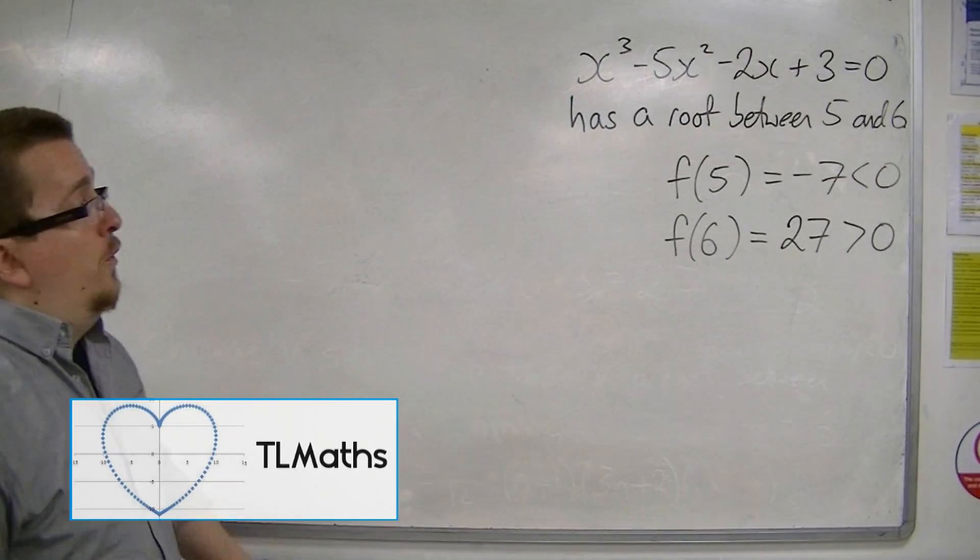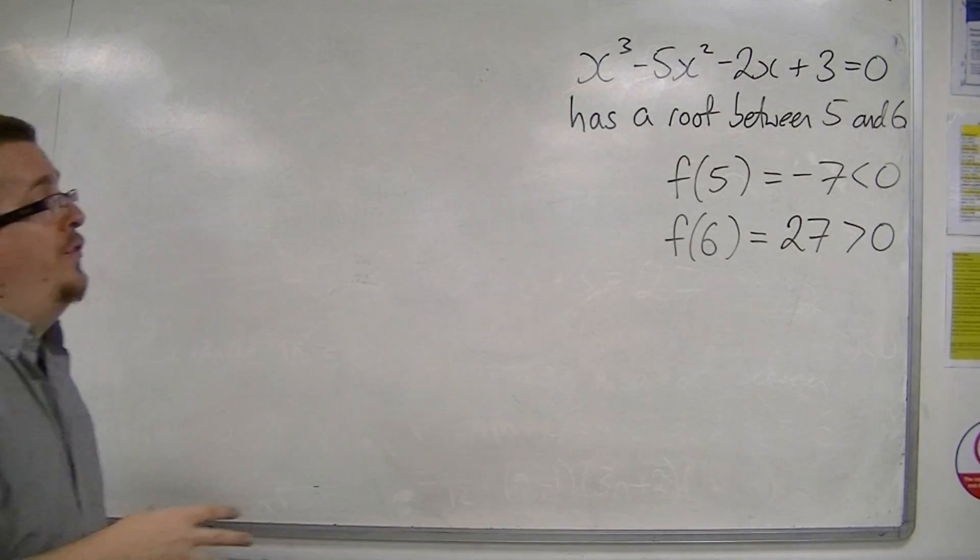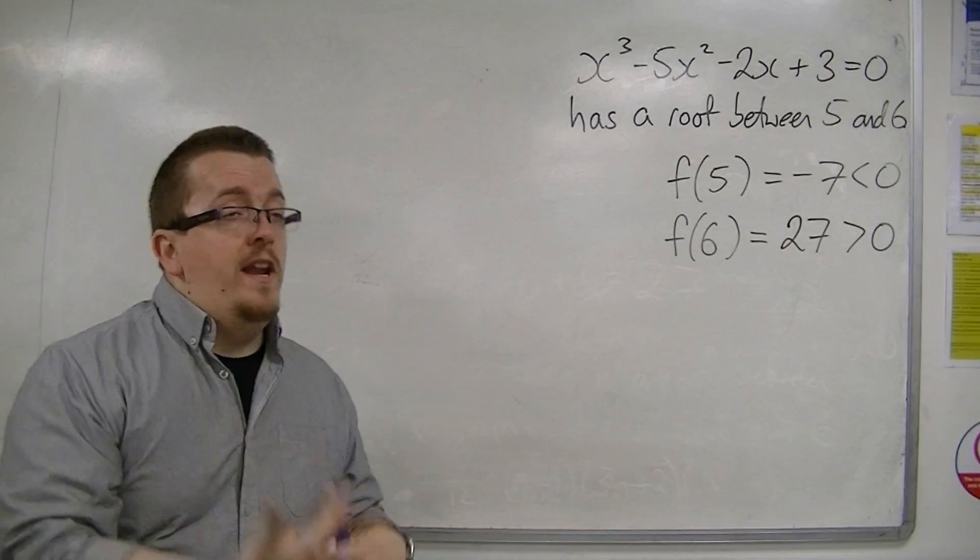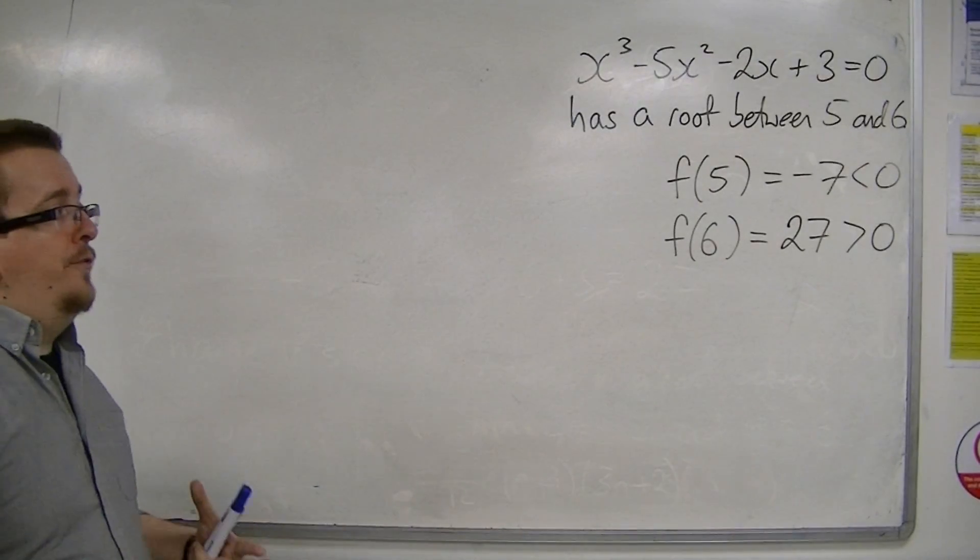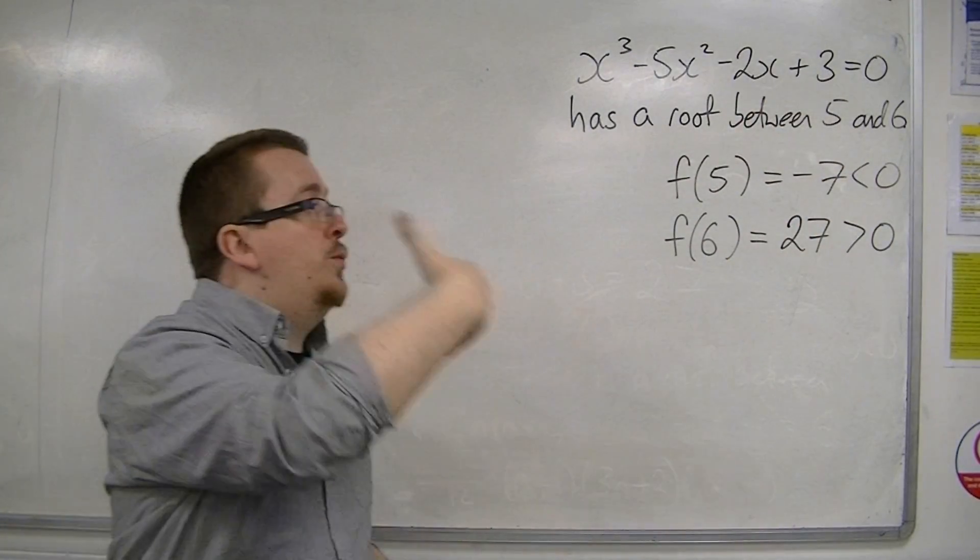So in a previous example, we've been looking at x cubed minus 5x squared minus 2x plus 3 equals 0. And we know that there is a root between 5 and 6, because we found that f of 5 is minus 7, and f of 6 is 27.